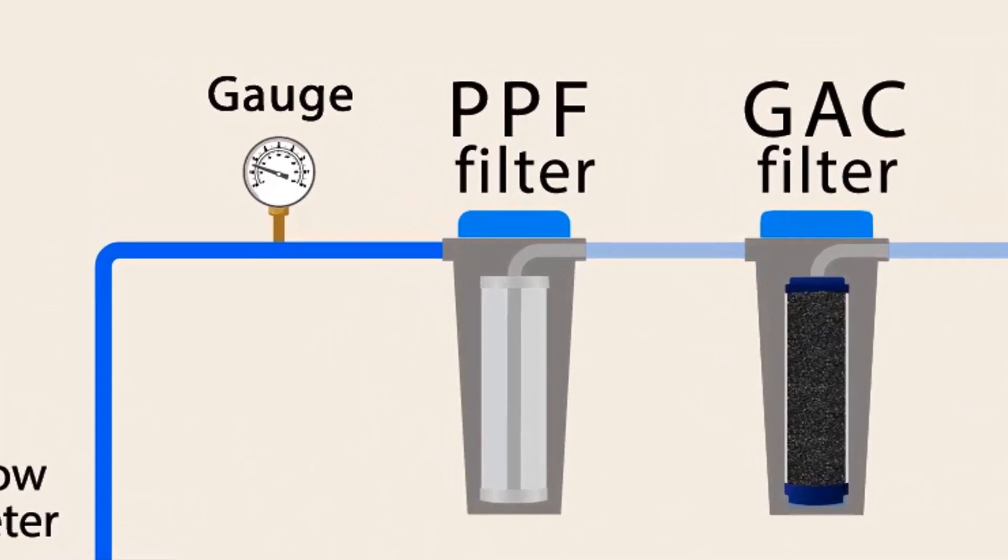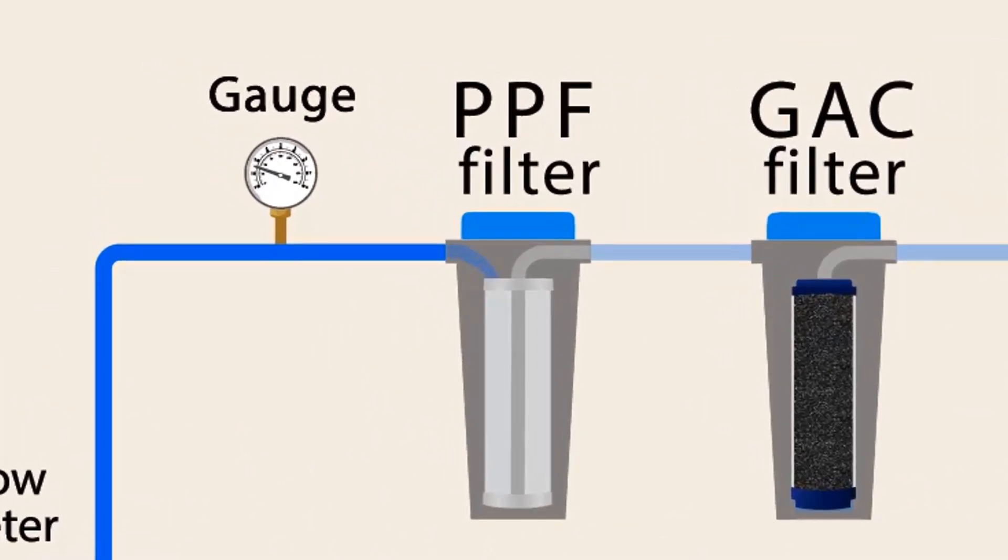This filter is made of polypropylene fiber. That's why we called it PPF filter. Its structure is like a honeycomb. It removes the sand, silt, dirt, and rust particles.